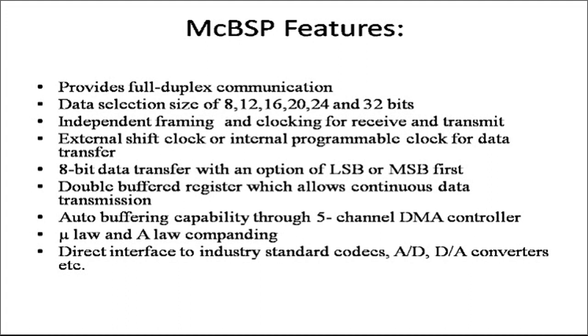8-bit data transfer with an option of LSB or MSB first. You already know that data can be transferred as LSB first or MSB first. Usually LSBs are transferred first in serial type of communication. Double buffered register which allows continuous data transmission. Then auto buffering capability through five channel DMA controller, which helps in DMA transfer of data when a chunk of data needs to be transferred.